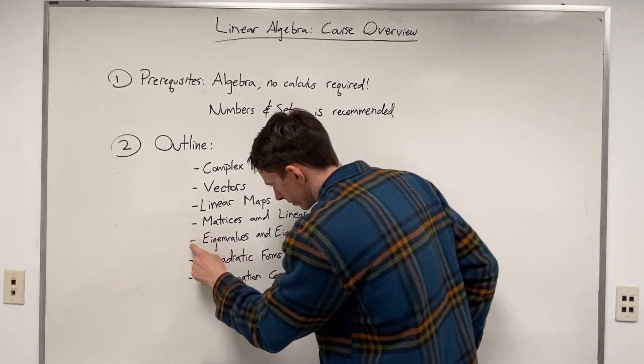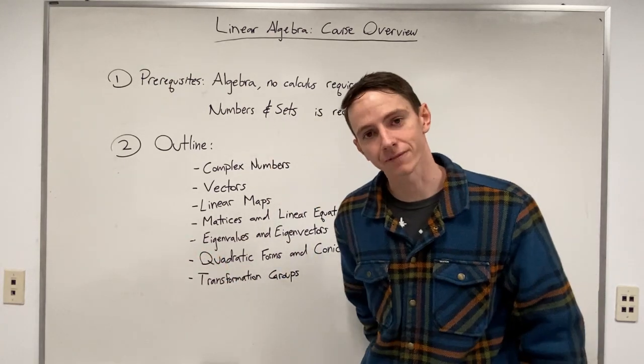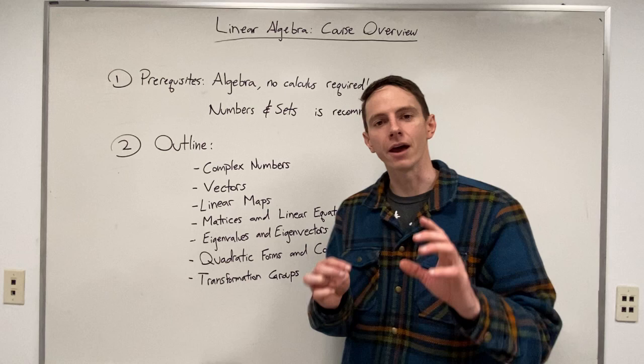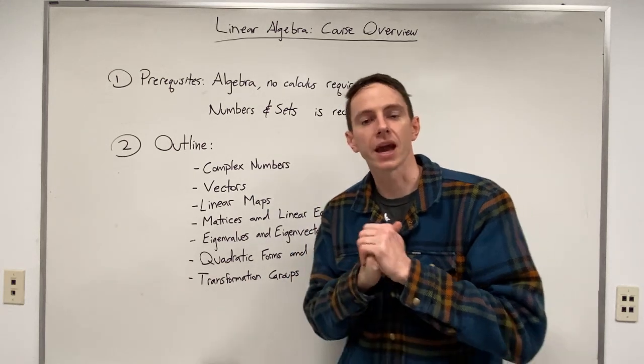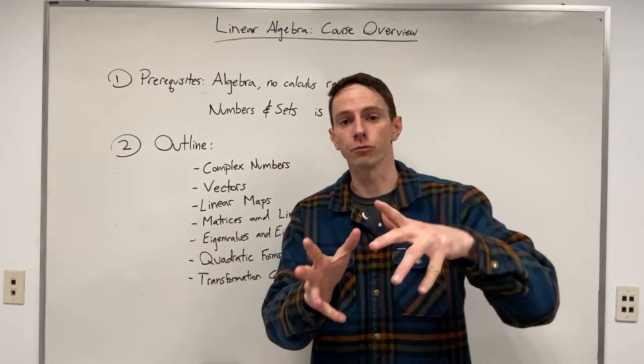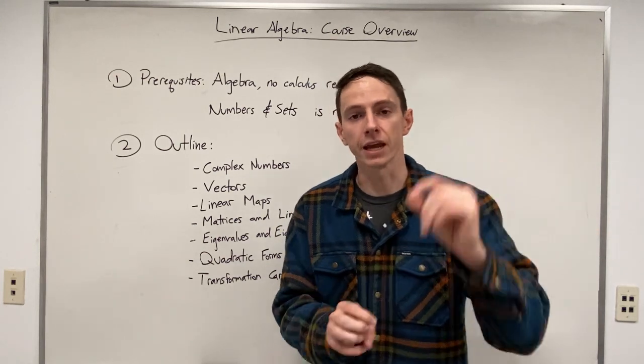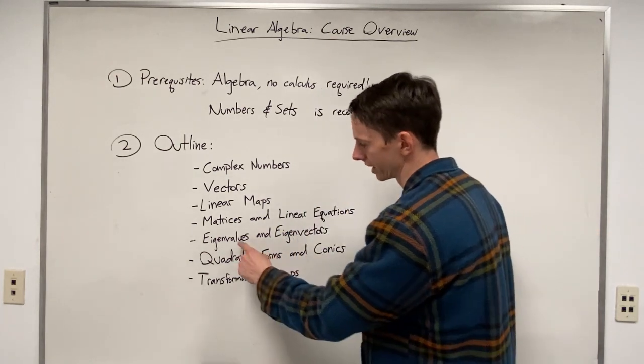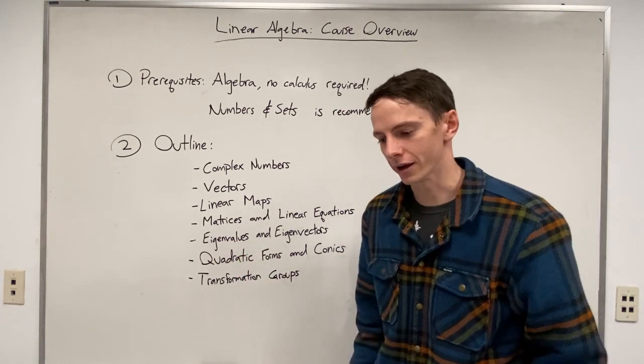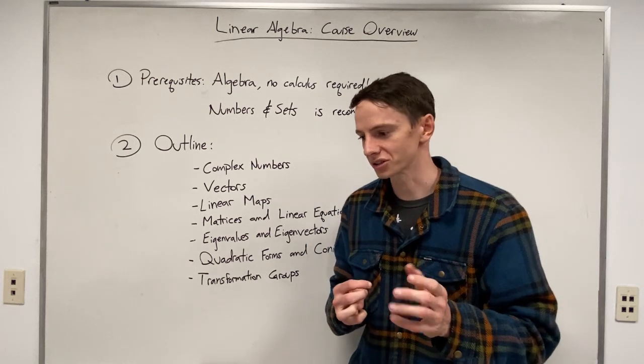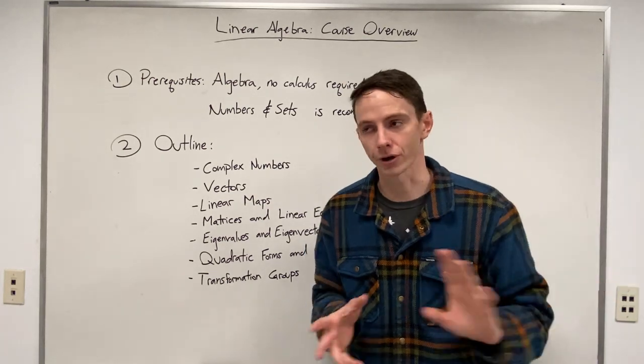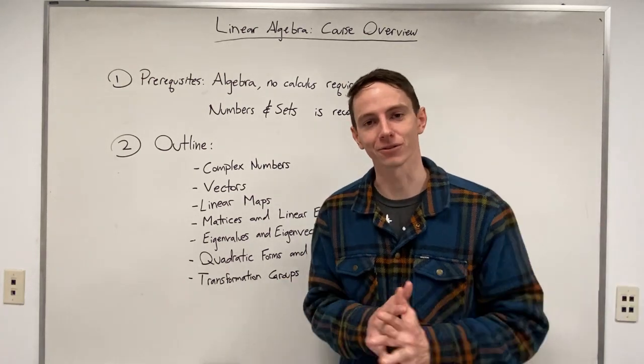Then when we get down to this section on eigenvalues and eigenvectors, it turns out that if you have a given matrix, that matrix may have an associated set of what are called eigenvectors. And every eigenvector has a corresponding eigenvalue. And understanding how eigenvectors and eigenvalues work is incredibly important for a wide, wide variety of problems.